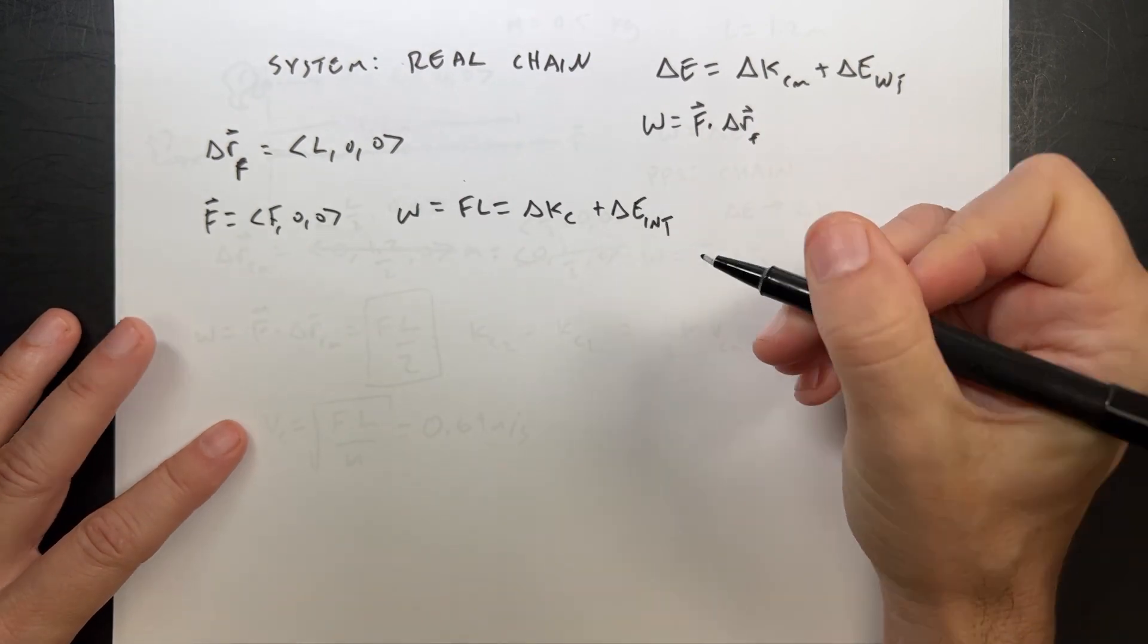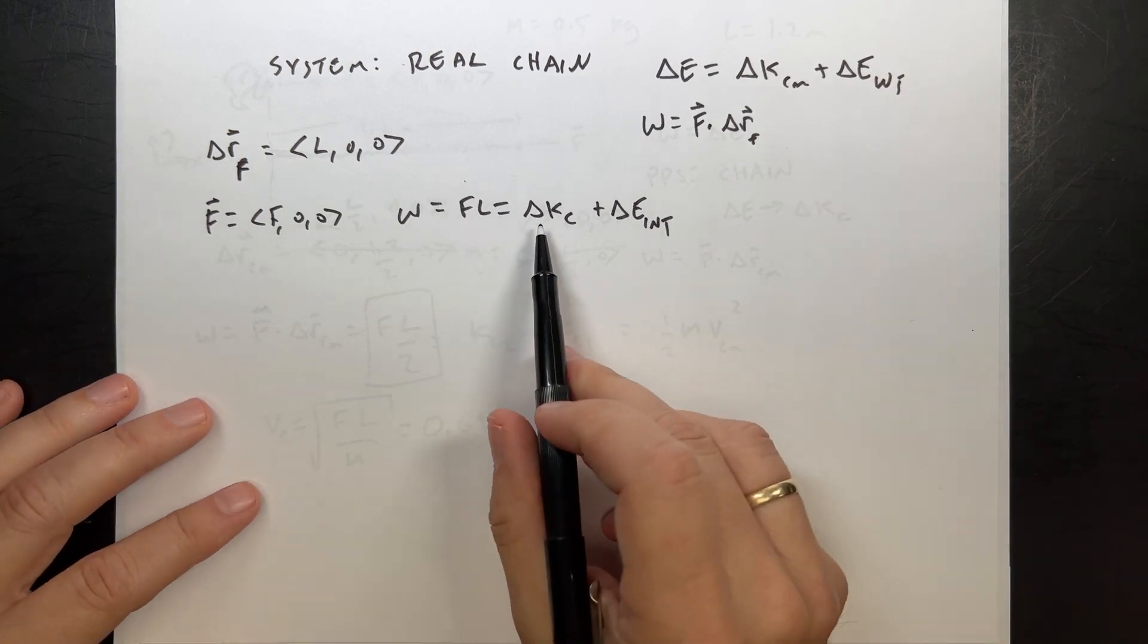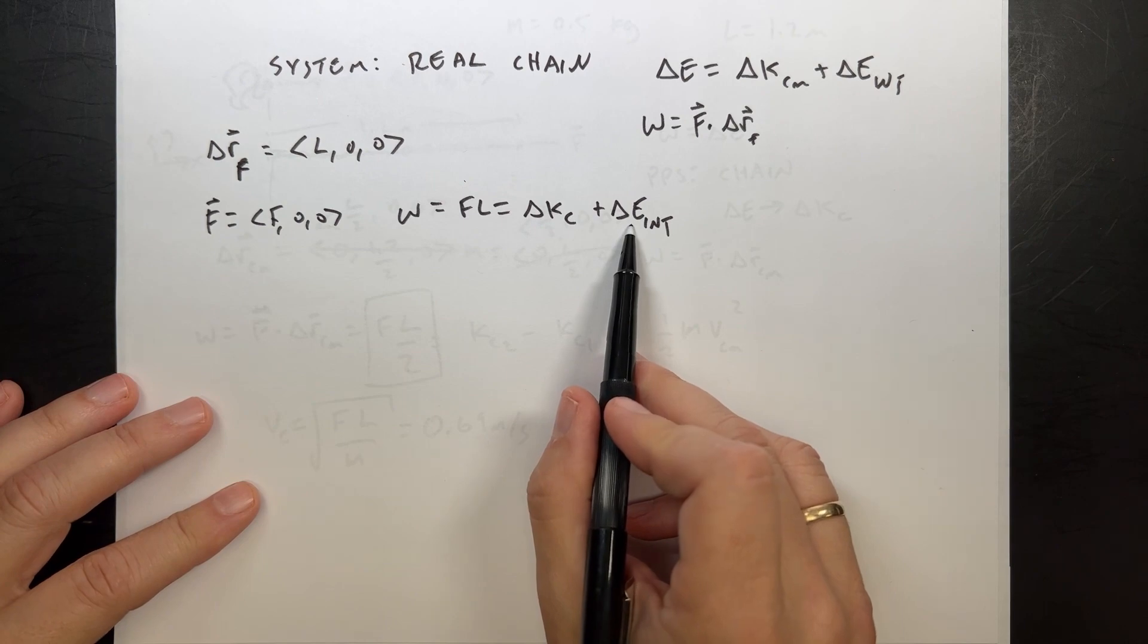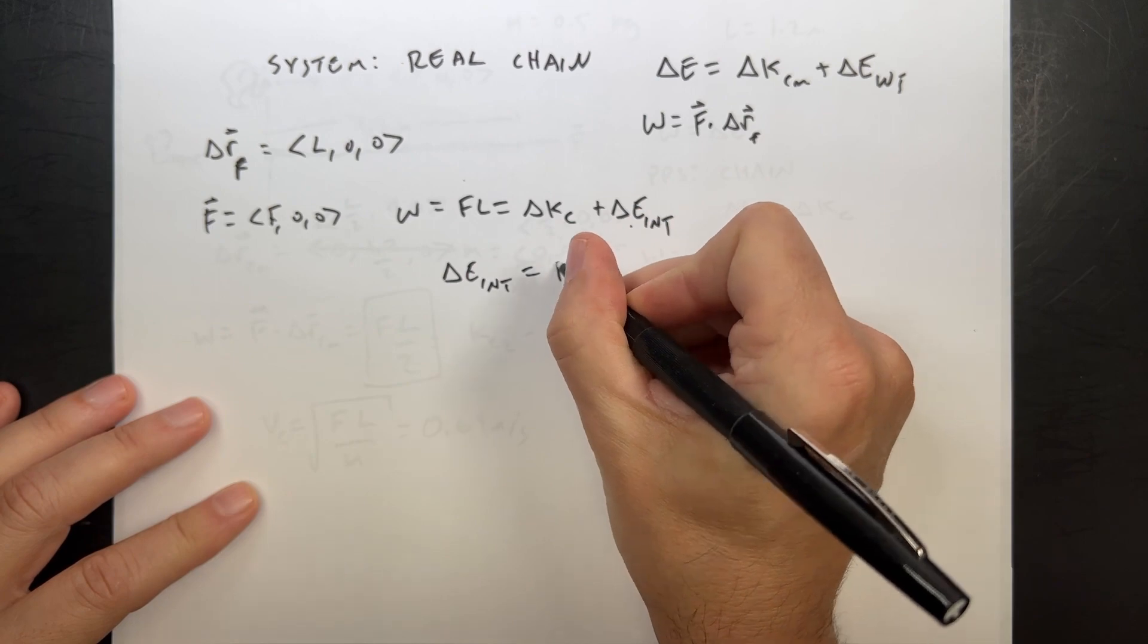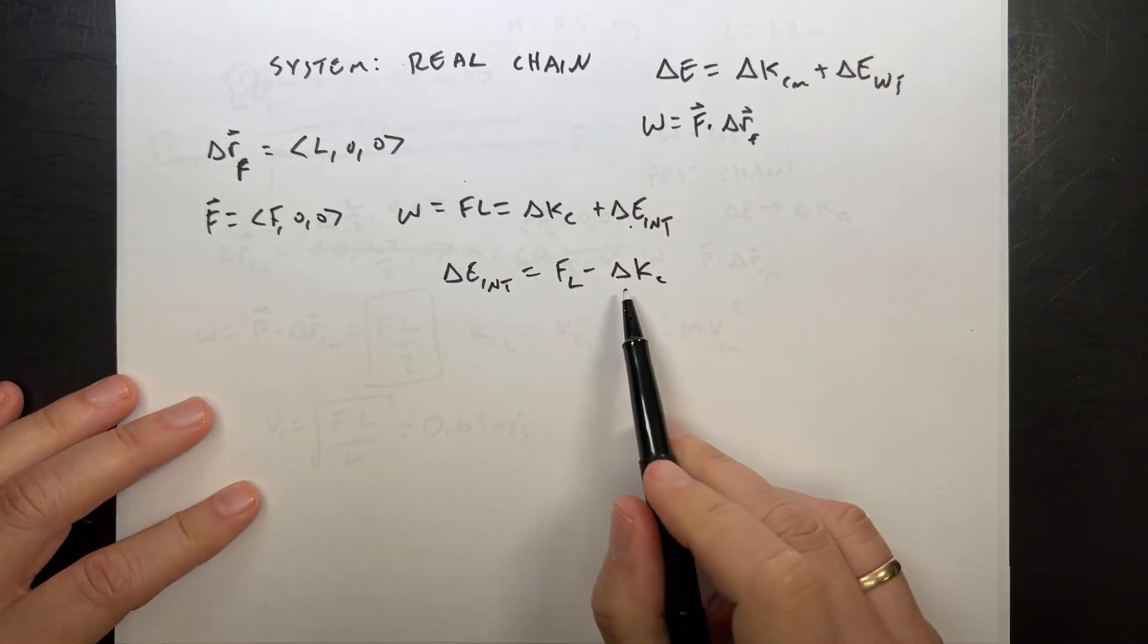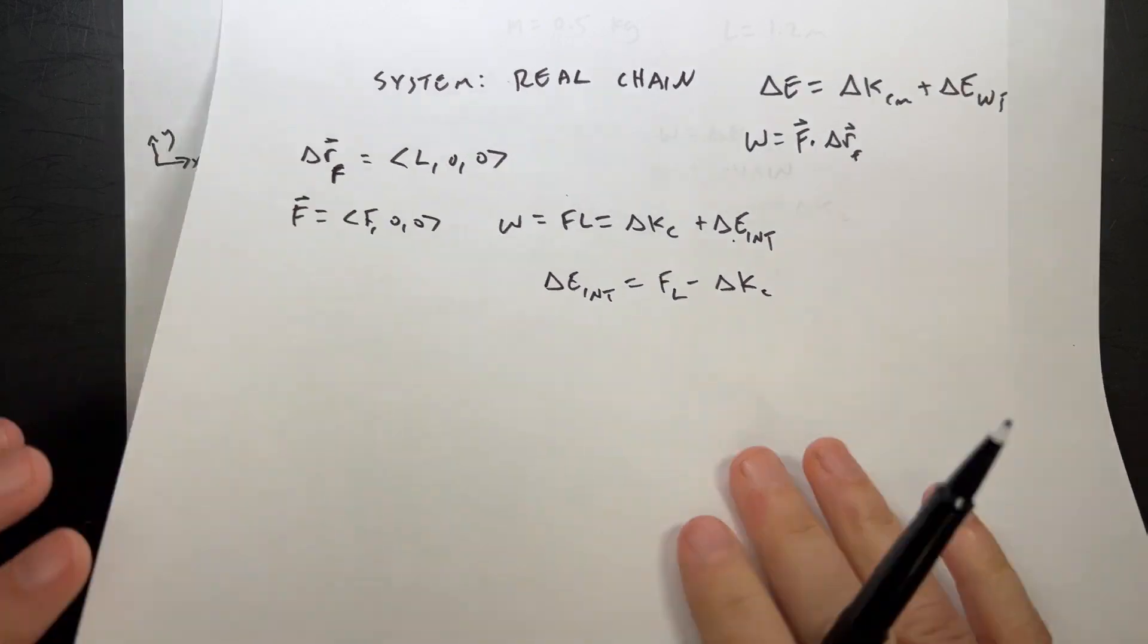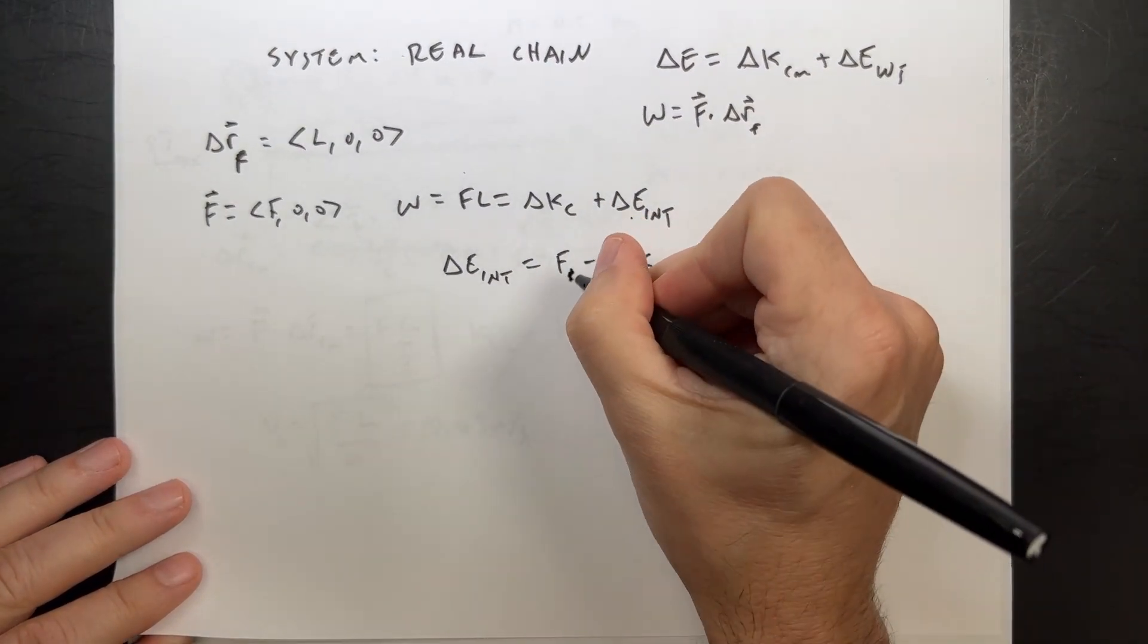And that's going to be the change in kinetic energy of the center mass plus the change in internal energy. I'm just going to call it internal. It could be anything. It could be thermal. It could be configuration energy, sound, and all these other kind of things. So I want to solve for this delta E internal is F L minus delta K of the center mass. And I've already found that, right? I said I put a box around it. It's F L over two. So F L minus F L over two is F L over two.